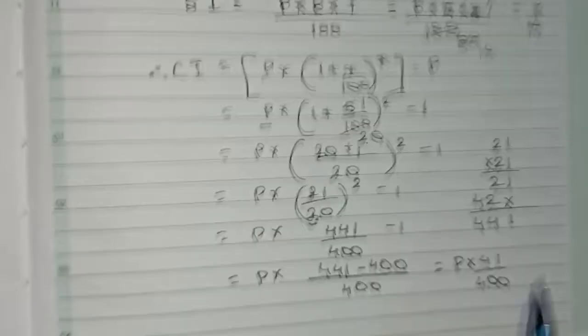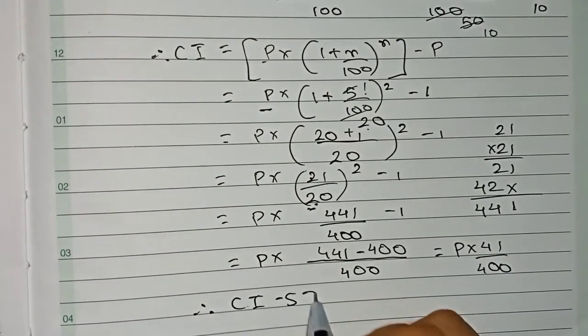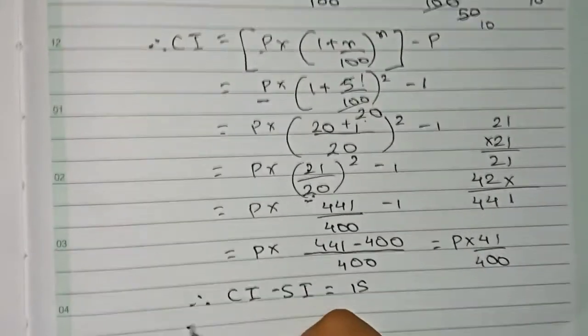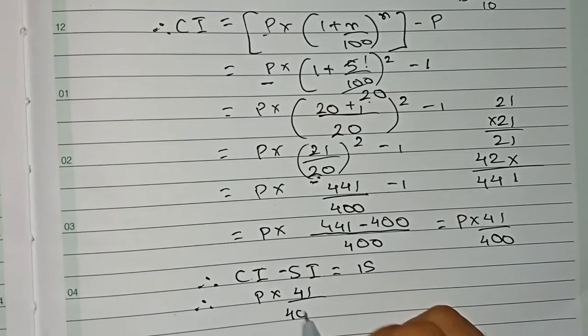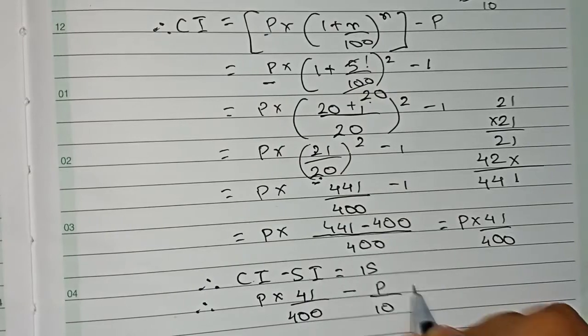So this is the value of our compound interest. Now we write that CI minus SI is given in the question as rupees 15. Therefore, CI is P × 41/400 minus SI, which is P/10, equals 15.